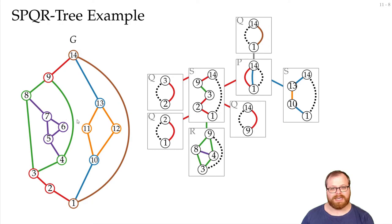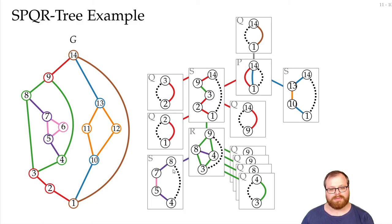Again, we have a bunch of single edges, so we get Q nodes here. But this part, we have to further divide. And here, we can again see, we have cut vertices. We get a path. So, we have an S node.